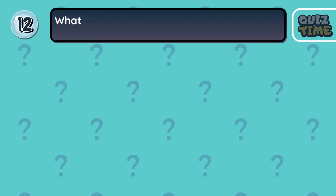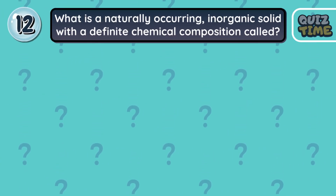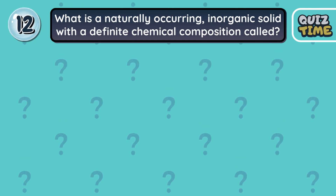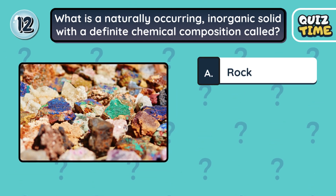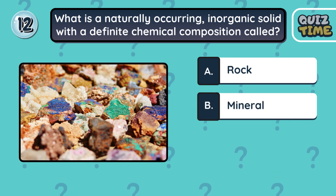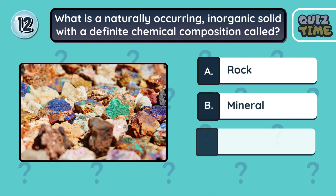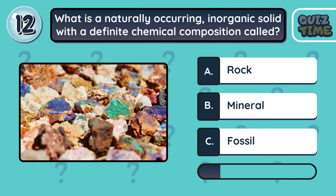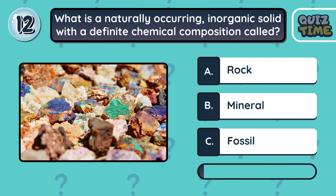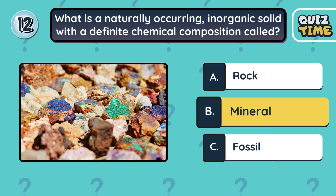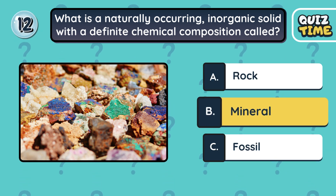Number 12. What is a naturally occurring, inorganic solid with a definite chemical composition called? A. Rock. B. Mineral. C. Fossil. The correct answer is B. Mineral.